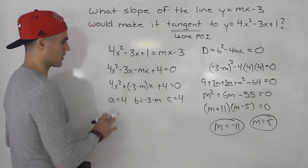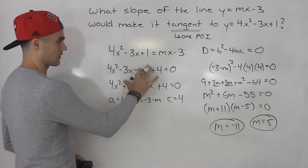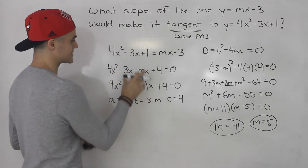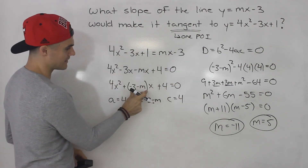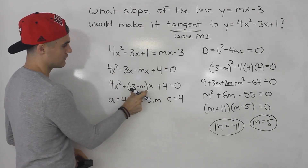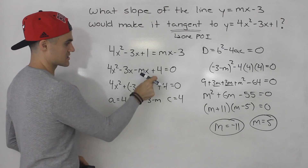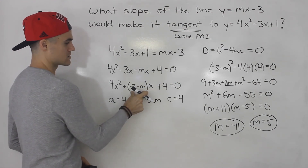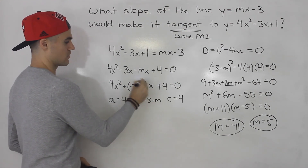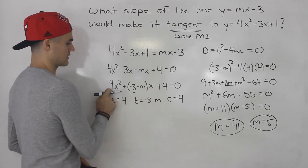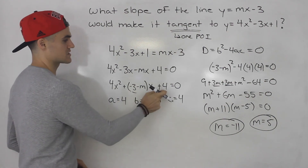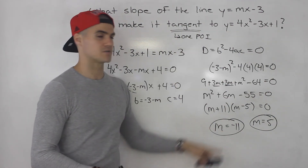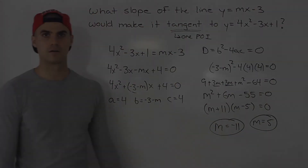So the trickiest part was probably knowing that we have to make the y-values equal, bring everything to one side, and then we have an expression for b, the a was 4, and the c was 4. Set the discriminant to 0, and then solve for m.